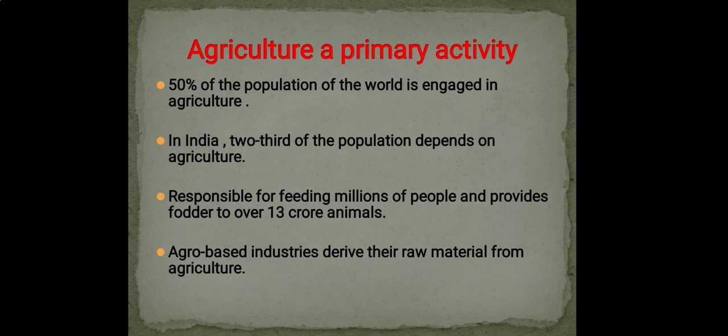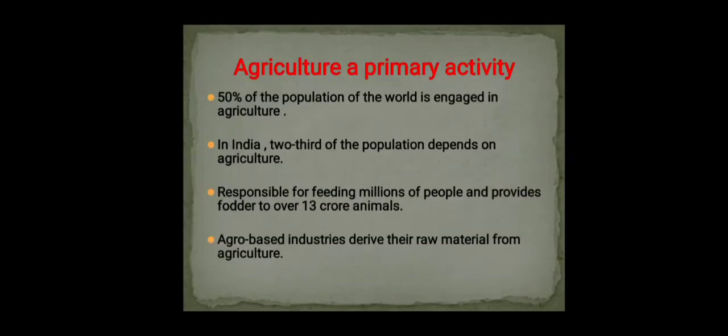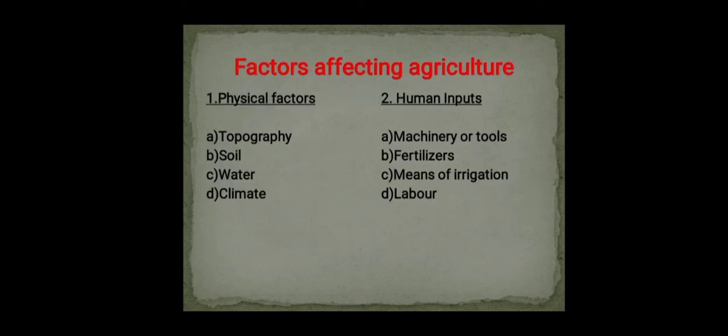Agriculture is considered a primary activity because more than 50% of the world's population is engaged in it. In India, two-thirds of the population depends on agriculture for their livelihood. Agro-based industries also derive their raw materials from agriculture, making it both a primary and an economic activity.